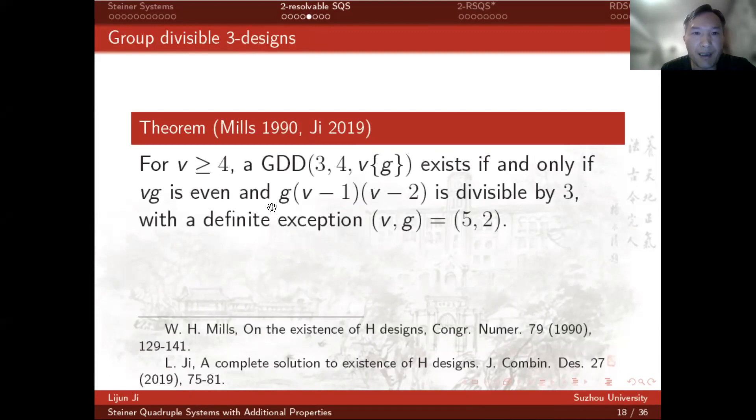In 1990, Teirlinck determined the GDD(3, 4, v | g), except with v being 5. In 2019, I gave a completion.